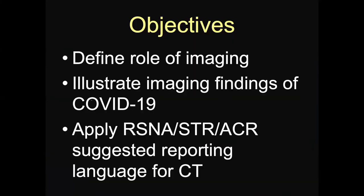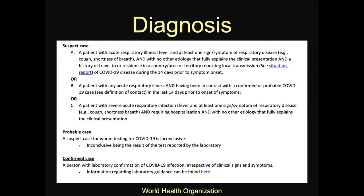I'm going to define the role of imaging, illustrate the imaging findings, and apply the recently published RSNA, STR, and ACR suggested reporting language for CT. I'll also show some radiographic images. This is the definition for the diagnosis of COVID-19 from the World Health Organization, and it's important to recognize that imaging is not part of the diagnosis. Different institutions are using imaging differently, but it's primarily based on proving it through PCR. Now we have a lot more available testing than we did a month ago.